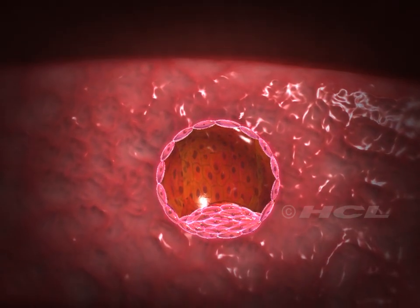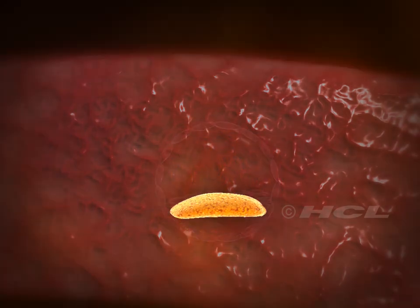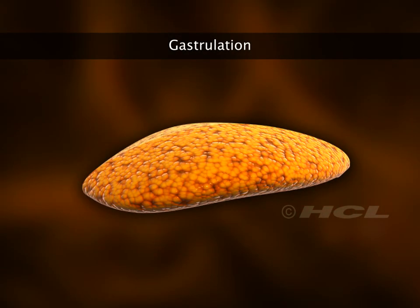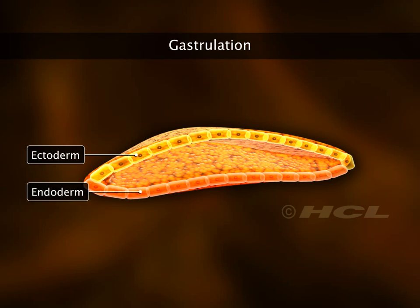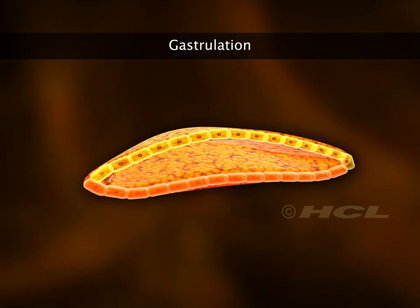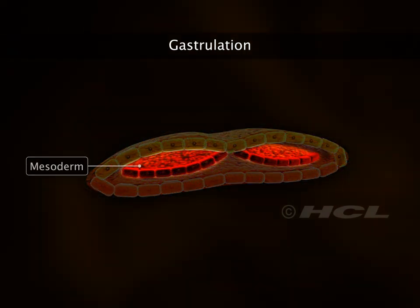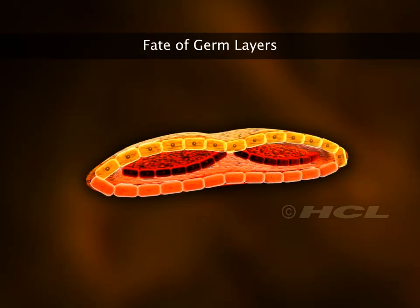Immediately after implantation, the inner cell mass of the blastocyst starts differentiating to form the primary germ layers. This process is called gastrulation. The cells of the inner cell mass migrate, divide, and rearrange into an outer layer called the ectoderm and an inner layer called the endoderm. During gastrulation, some cells that are moving inward contribute to form the mesoderm, the middle layer. The embryo is now called the gastrula.